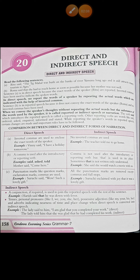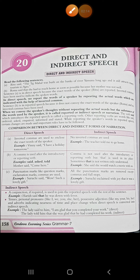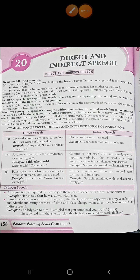Now let's see this table — the comparison between the direct and indirect form of narration. In direct speech, inverted commas are used to enclose the exact words of the speaker. See the example: Vinny said, 'I have a holiday tomorrow.' In indirect speech, no inverted commas are used — for example, 'The teacher told me to go home.' Then, a comma is used after the introductory or reporting verb in direct speech, like after 'said,' 'asked,' or 'told' — for example, 'Mother said, come here.'